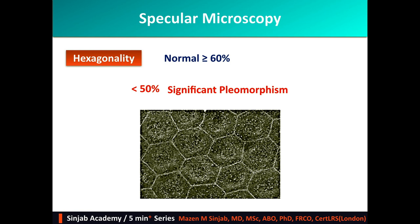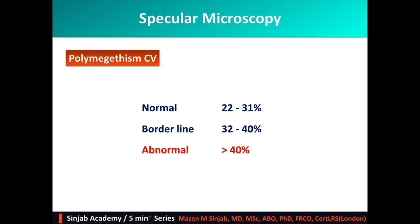Hexagonality is the description of the shape of the endothelial cells. The endothelial cells are normally hexagonal, and at least 60 percent of them should be hexagonal. When less than 50 percent are hexagonal, significant pleomorphism is present and corneal dystrophies should be excluded. In the case study videos in this series, some examples will be discussed. Polymegethism index is the other feature of endothelial morphology, and it is considered abnormal when it is more than 40 percent.